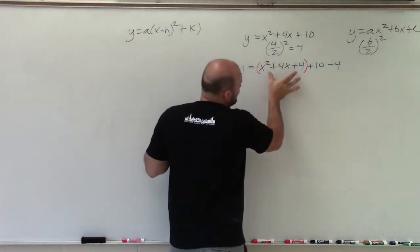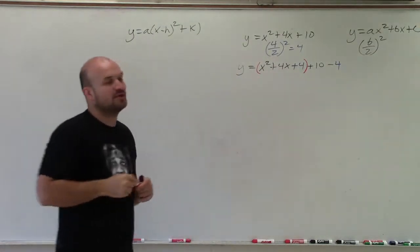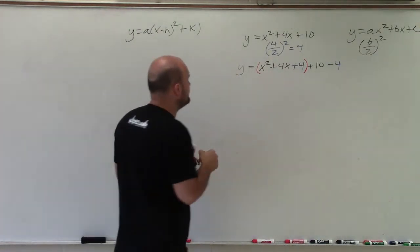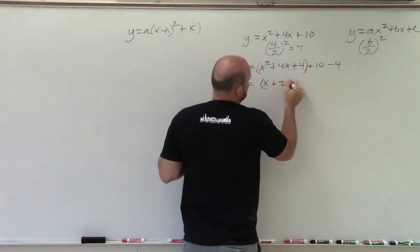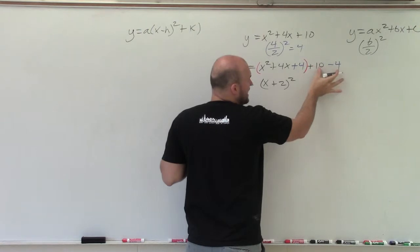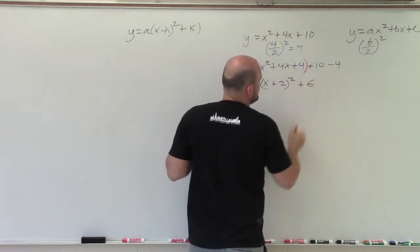So now I need to say, how can I factor x squared plus 4x plus 4? If you factor that, what you'll notice is the two factors are y equals (x plus 2) squared. Then I can combine these two: 10 minus 4 is positive 6.